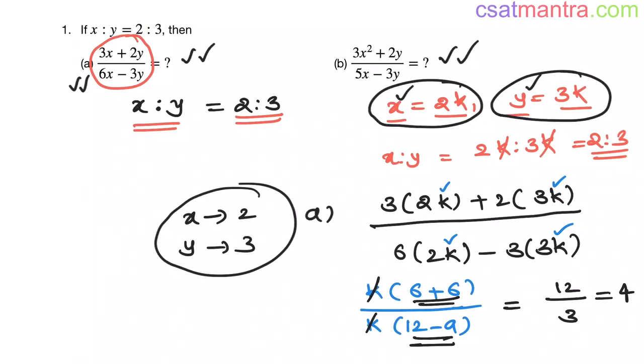But why is it happening like this? Because x power is 1, y power is 1; x power is 1, y power is 1. Since powers of x and y in numerator and in denominator are the same, they got cancelled. Understand? So our final value is independent of k.